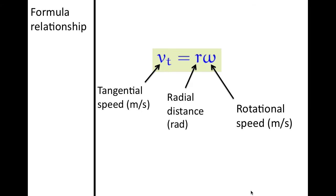There is a relationship between tangential speed and rotational speed. The equation is V sub T equals R times omega — tangential speed equals the radial distance times the rotational speed. The radius is half the diameter. Omega is the rotational speed.